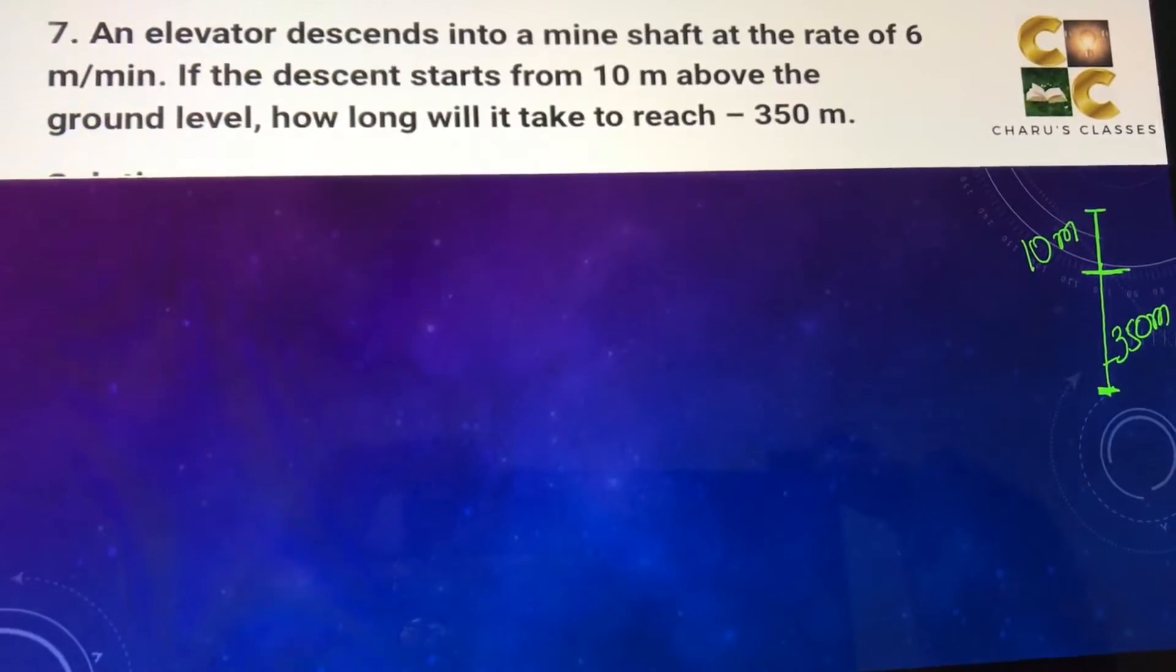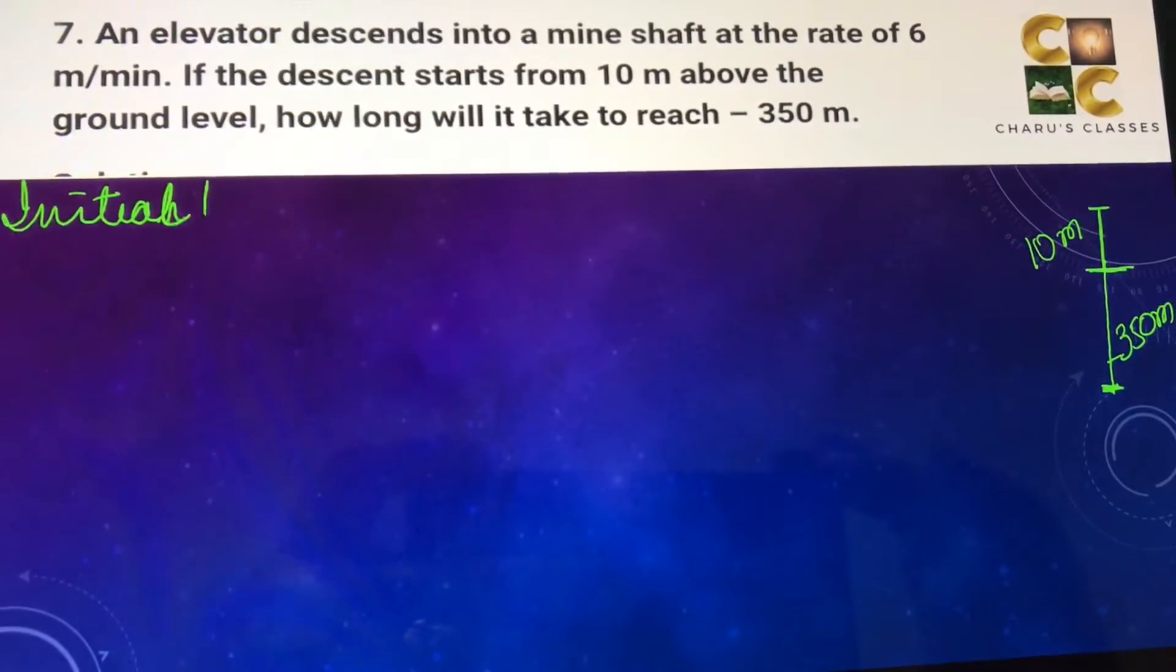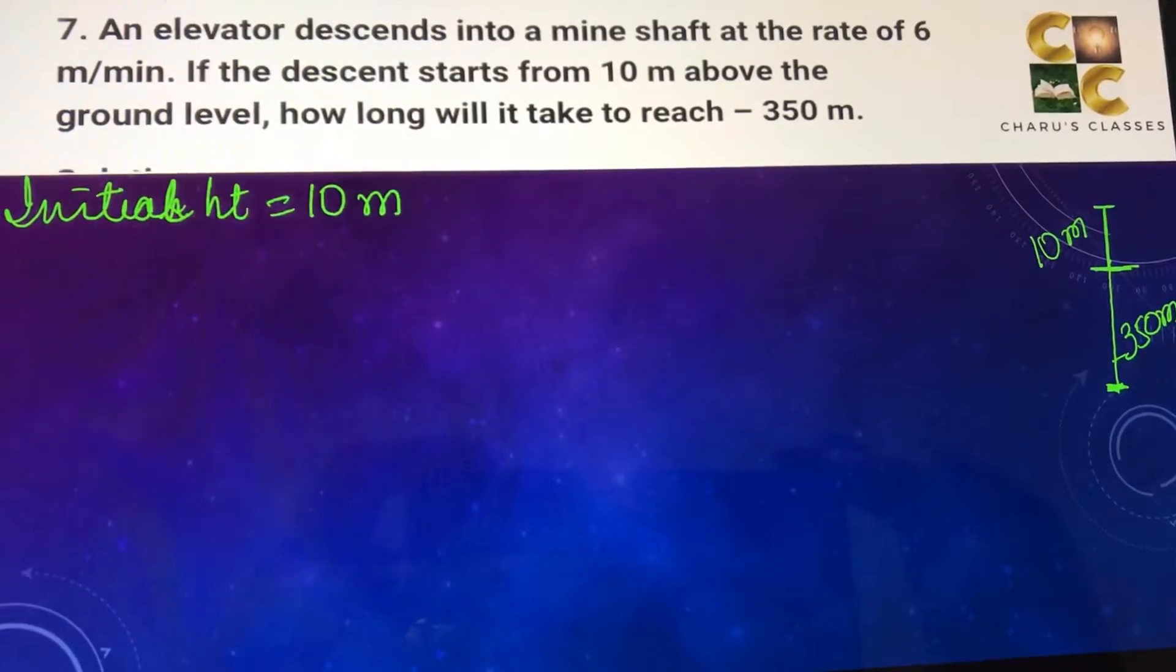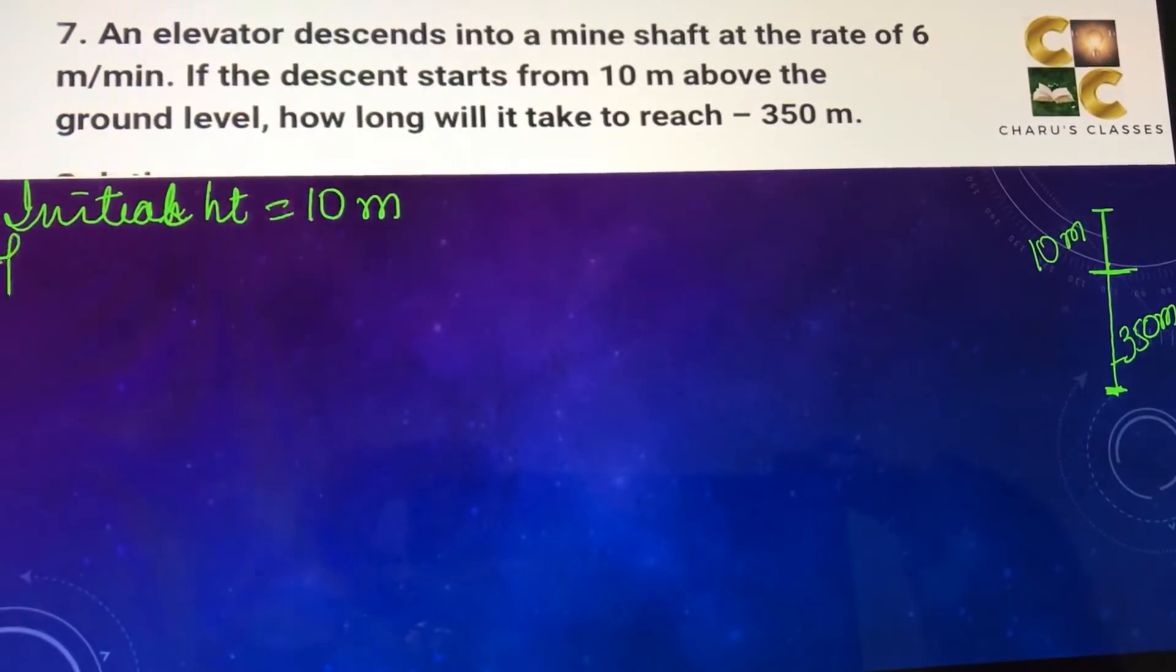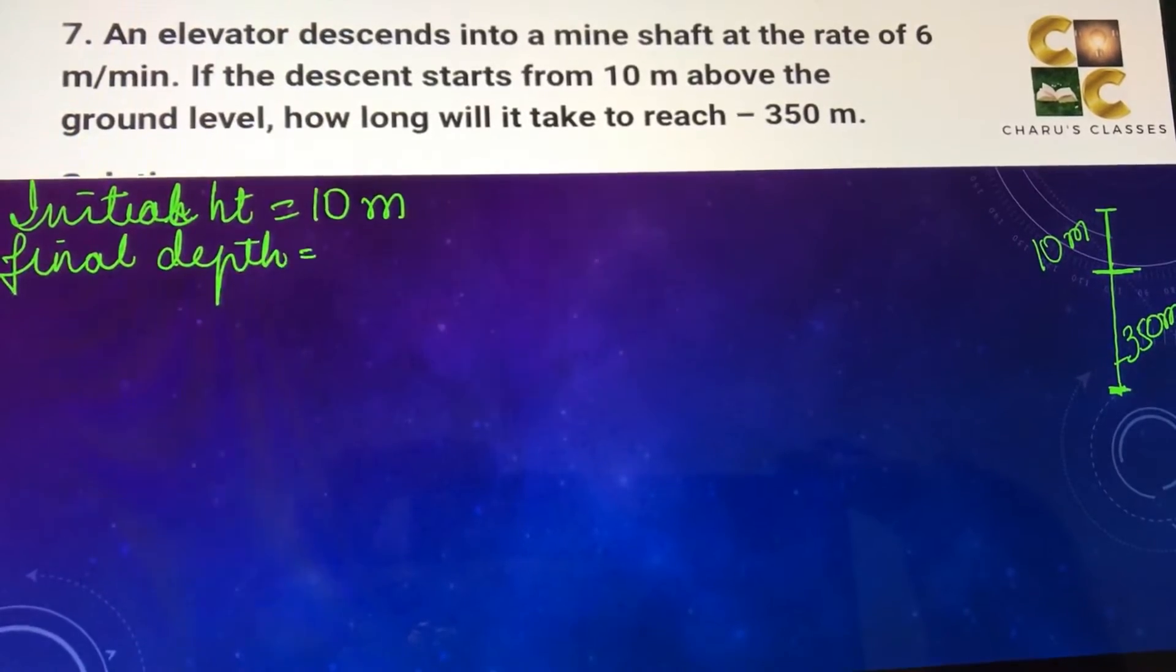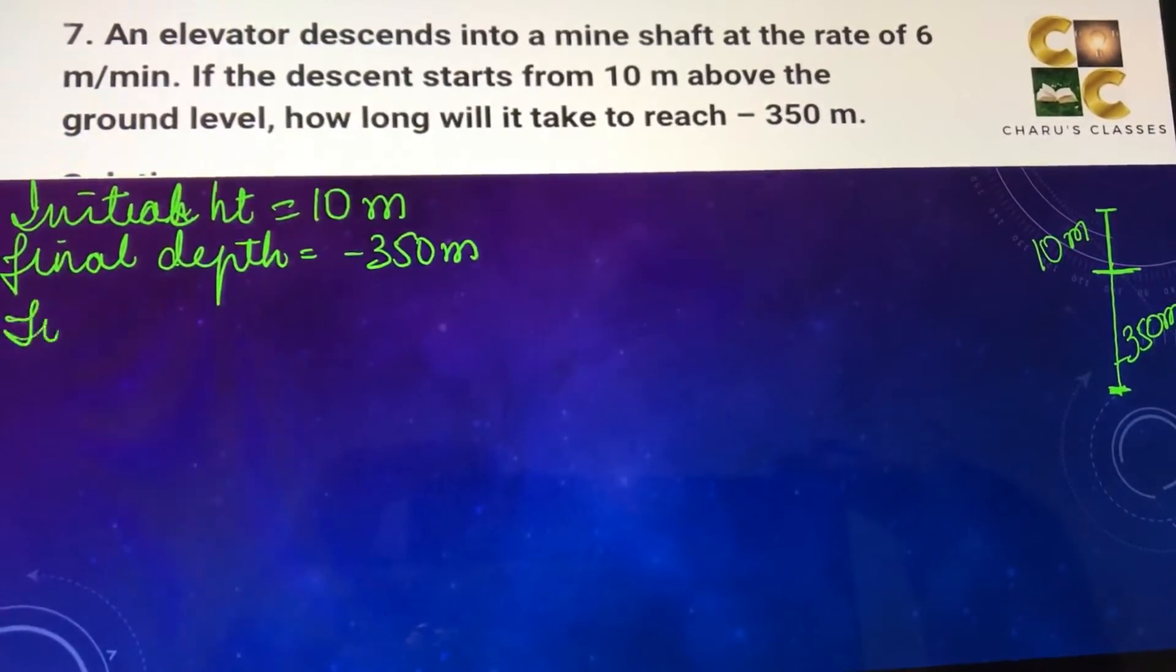So the initial height is equal to 10 meters and the final depth is equal to minus 350 meters. So first we will find the total distance to descend.